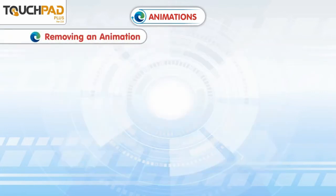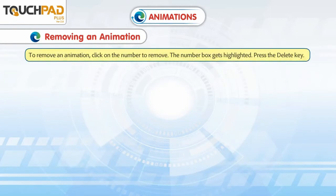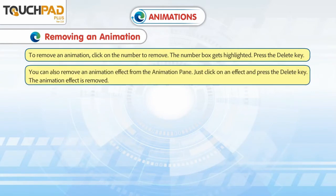To remove an animation, click on the number to remove. The number box gets highlighted. Press the Delete key. You can also remove an animation effect from the Animation Pane — just click on an effect and press the Delete key. The animation effect is removed.